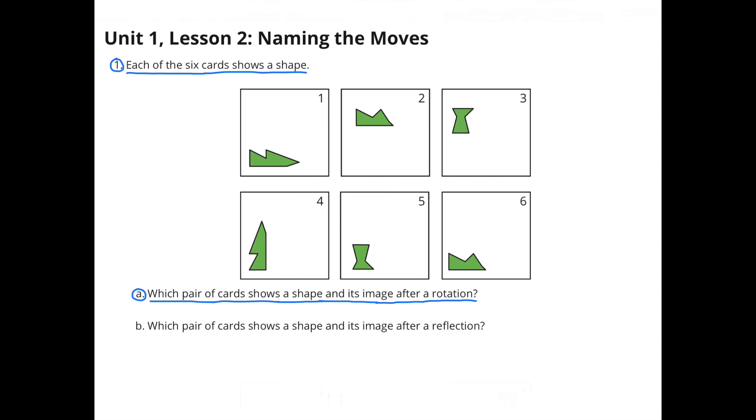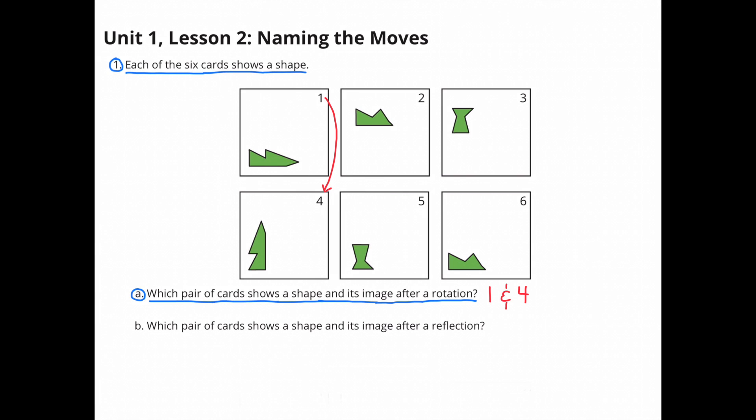Number 1. Each of the 6 cards shows a shape. A. Which pair of cards shows the shape and its image after a rotation? Remember, you're looking for a pair of cards, or 2 cards, that show the shape and its image after a rotation. Cards 1 and 4 show a shape and its image after a rotation.